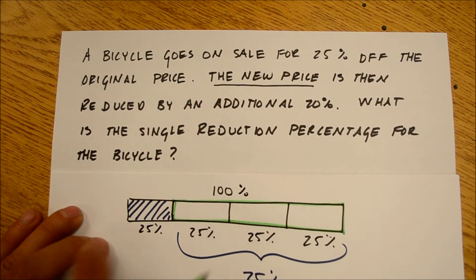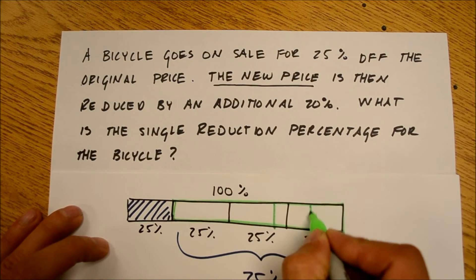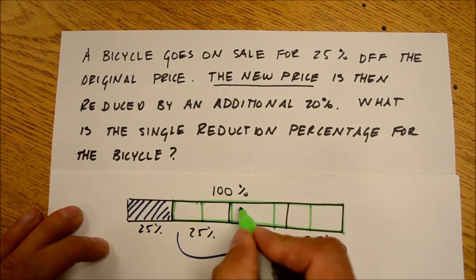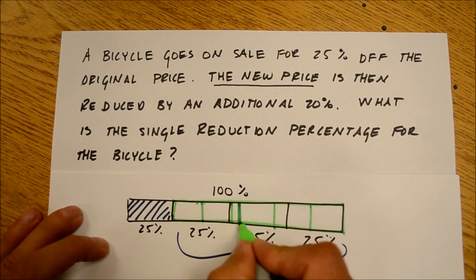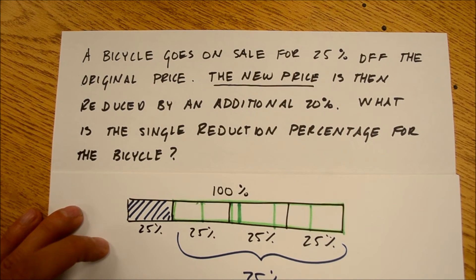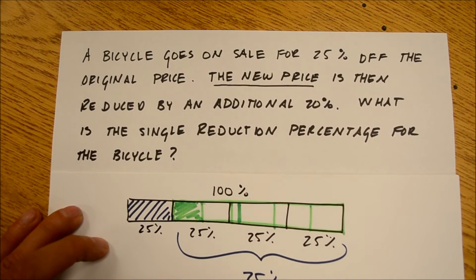Well, what's 20% of 100? It's 1 fifth. So, I can divide my new price into 5 equal portions. We'll do that. 1, 2, 3, 4, 5 equal portions. They're each 20% of my new price. Okay? And I take out one of those. That's the 20%.